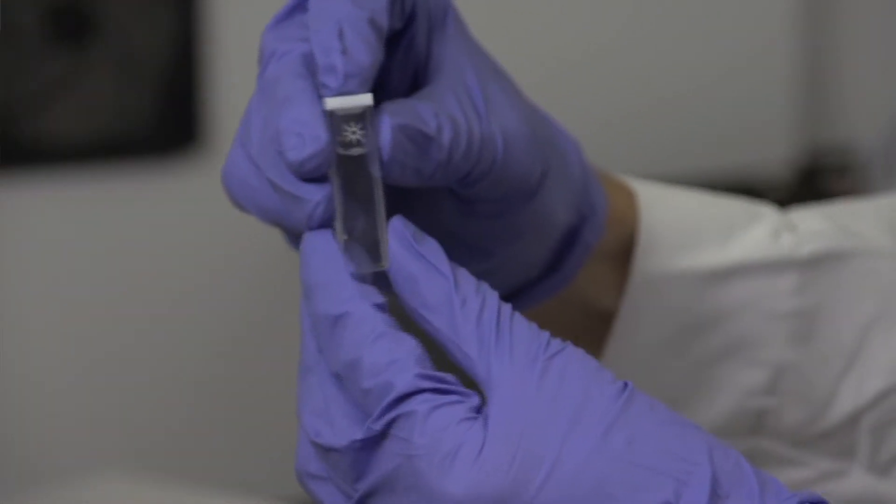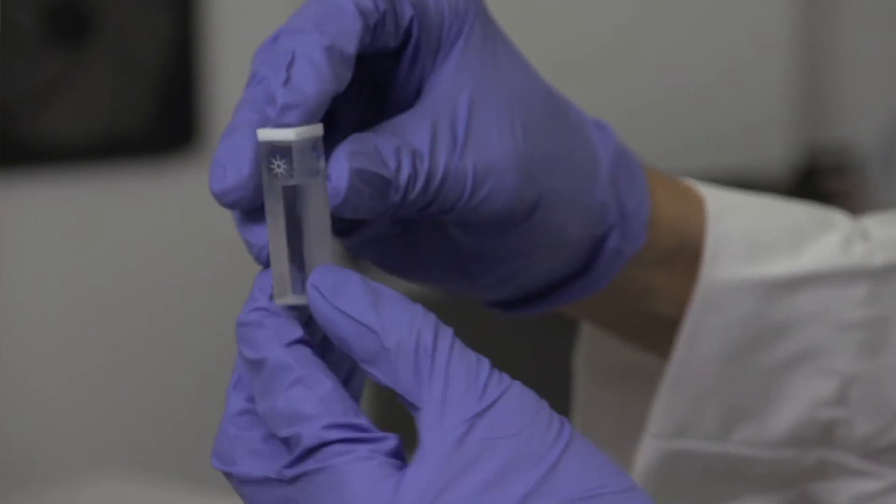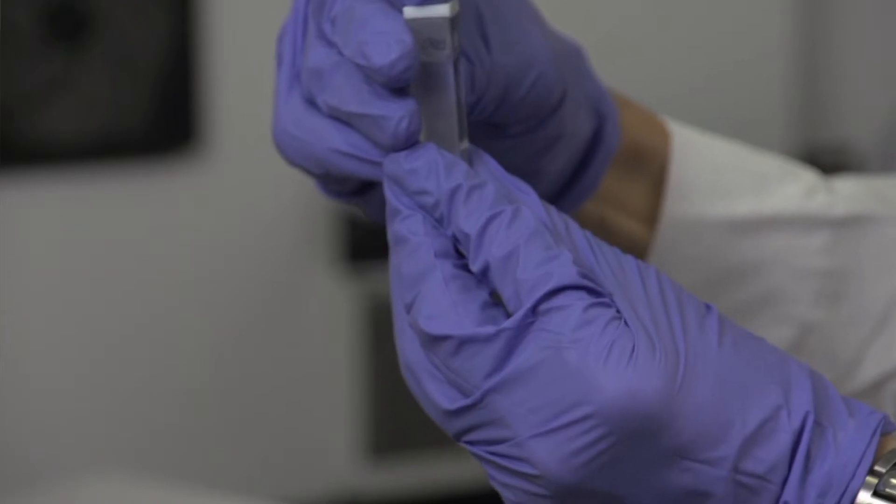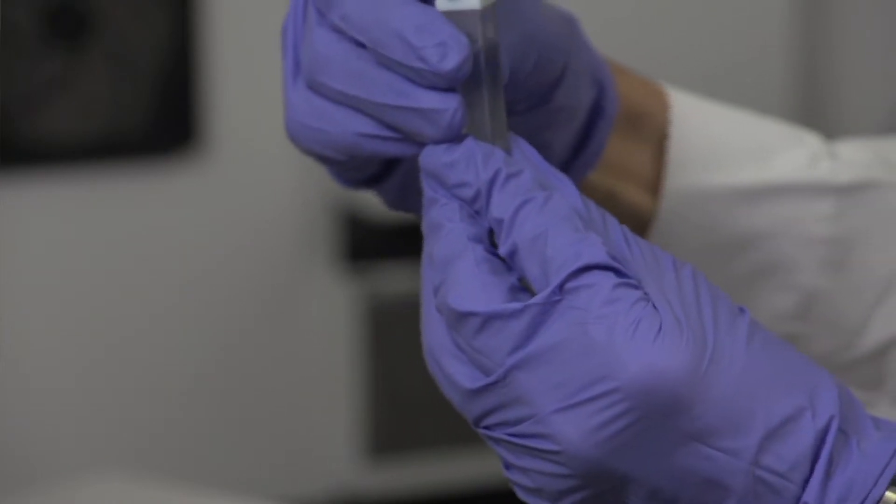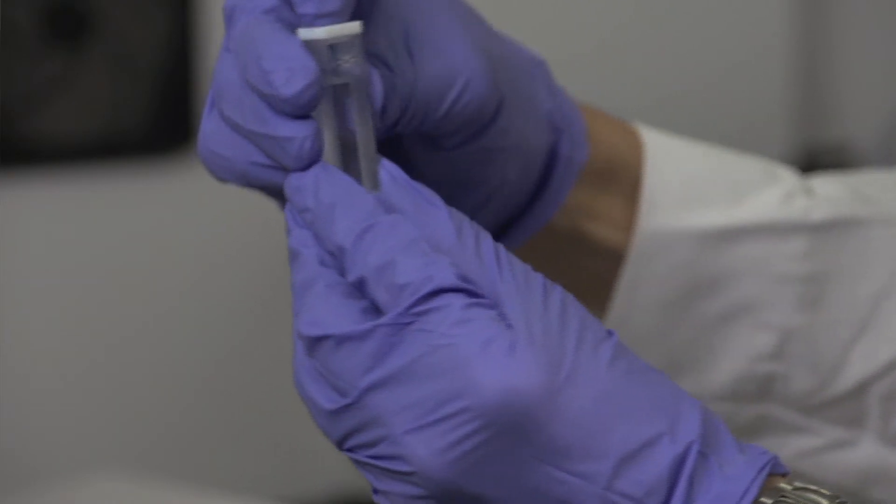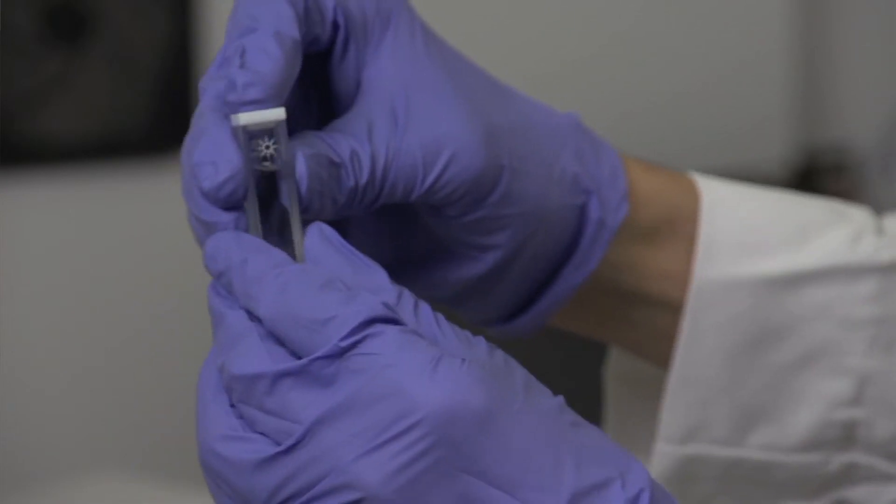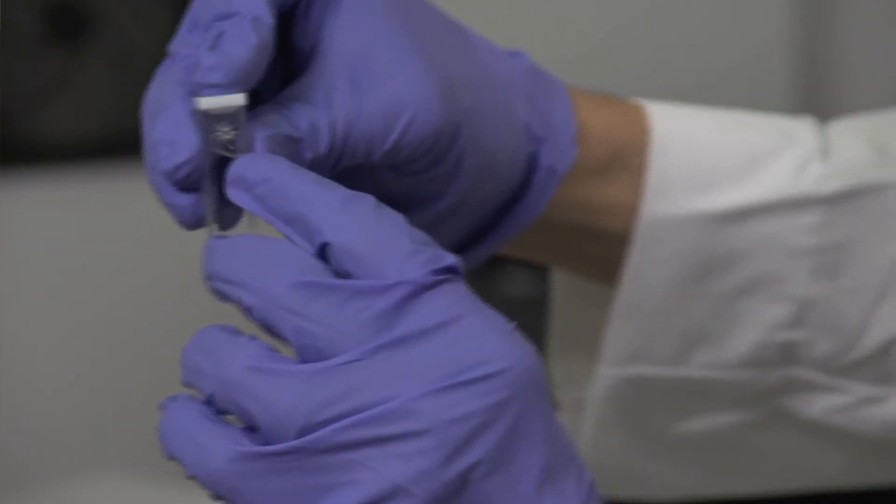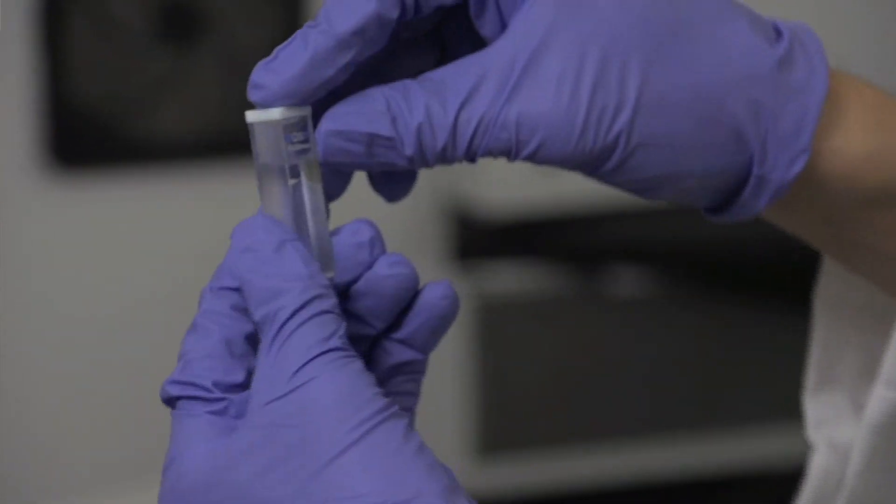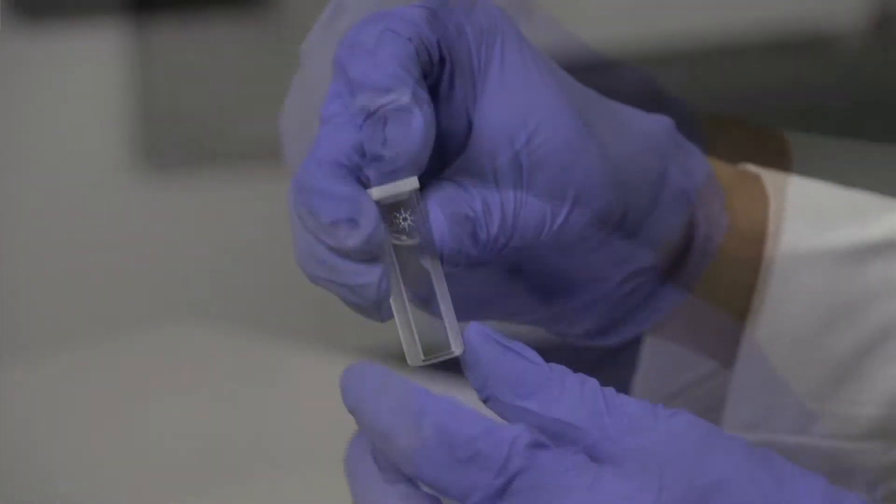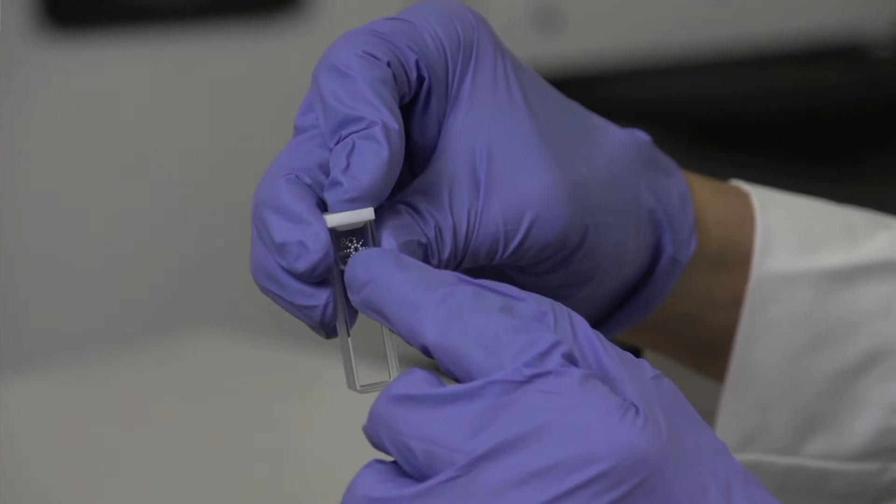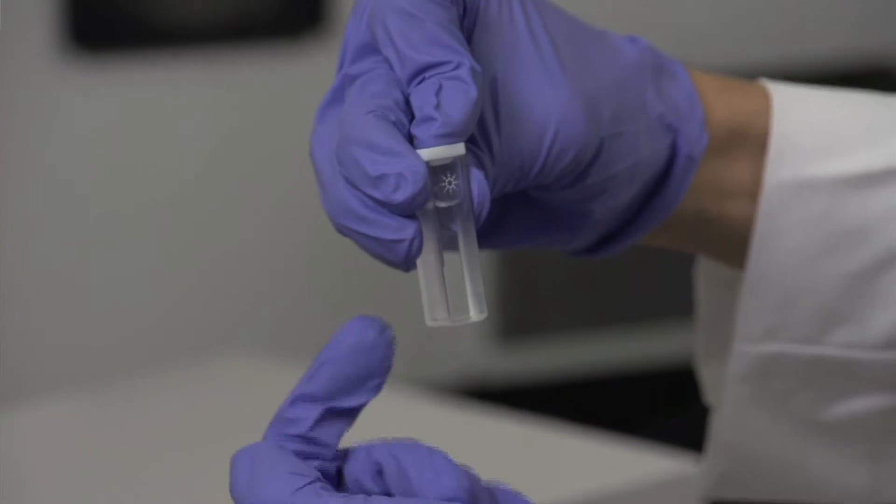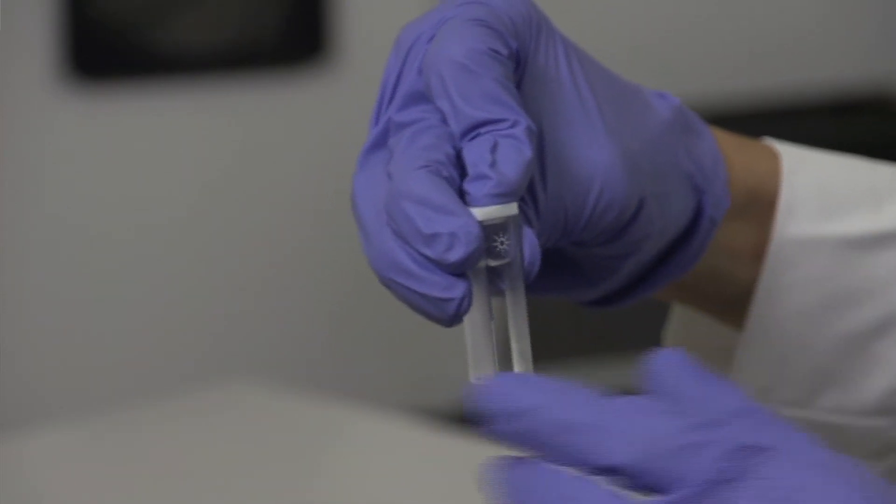Notice with the quartz cuvette that two of the sides are frosted, and these you will not want to place in the path of the beam, otherwise your spectral quality will not be good. Also notice that it will be unnecessary to mark the top of this cuvette because there are two different indicators on each side. The side of the cuvette with the little sun image will face towards the front of the bench such that the beam can go through that portion of the cuvette first.